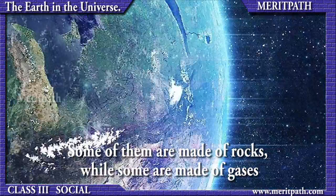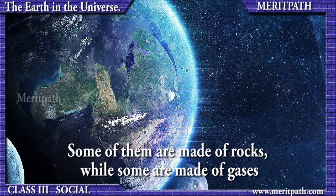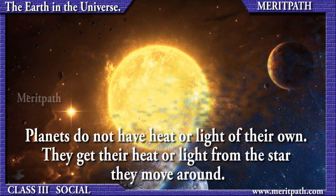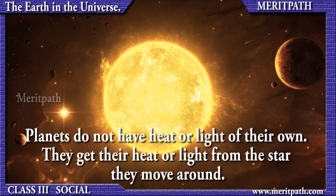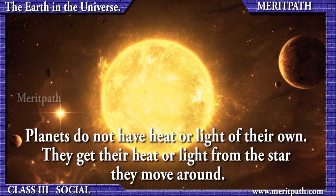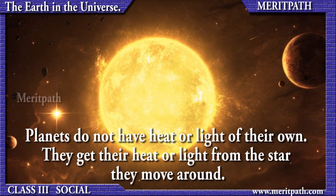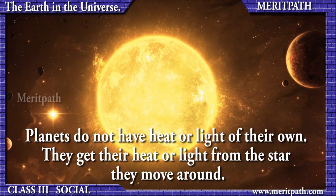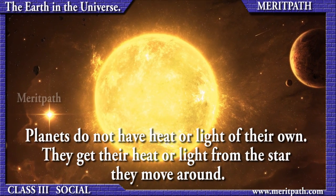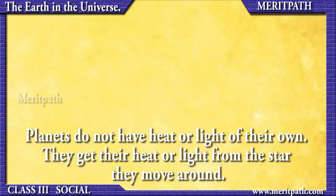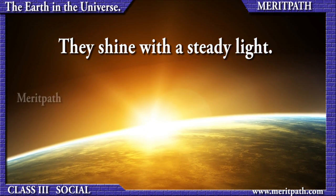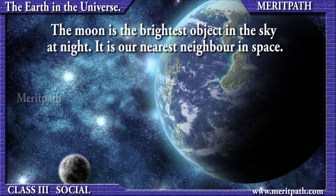But what are planets? Planets are heavenly bodies which are closest to the Sun. They are usually round in shape and made up of rocks or gases. Planets get heat and light from the star they move around because they do not have light of their own.